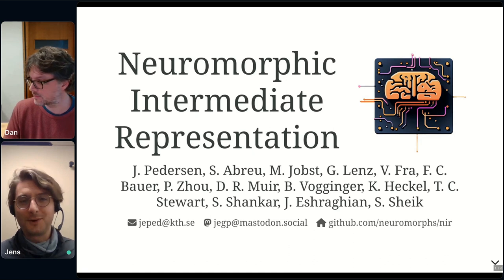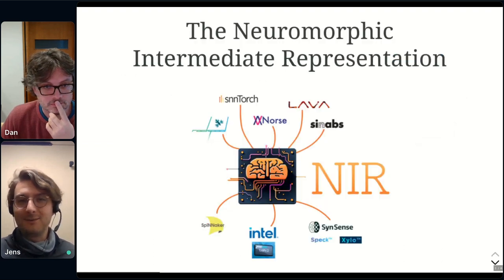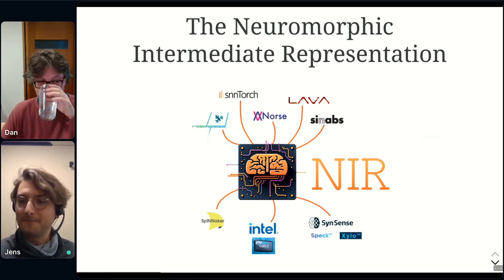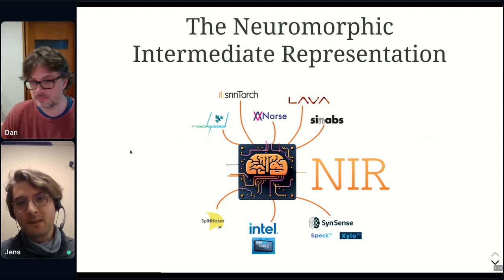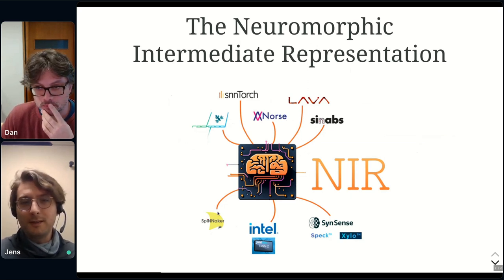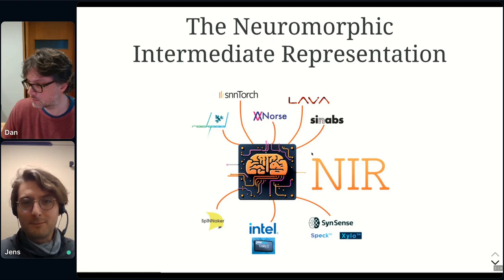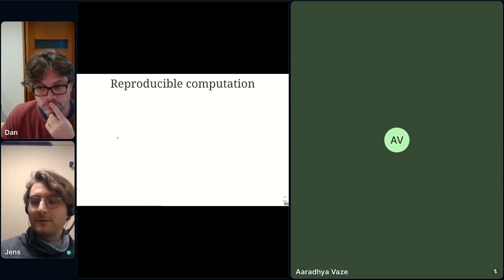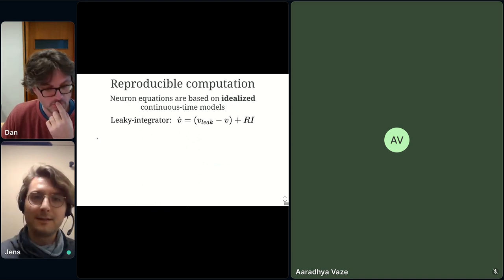The point of NIR is to wedge it in between all the different simulators on top and hardware platforms on the bottom, providing a shared representation that can be translated between different platforms — not just for taking models down to hardware, but also between simulator platforms. This only works if we can faithfully reproduce the computational model underneath. What we've chosen for that is an idealized continuous-time model.